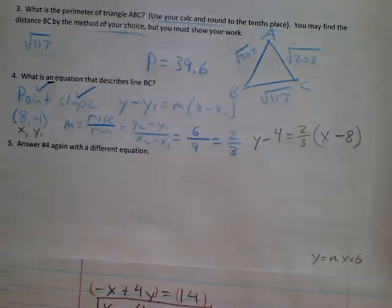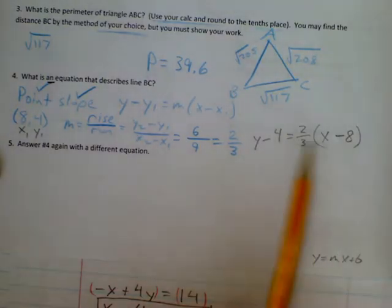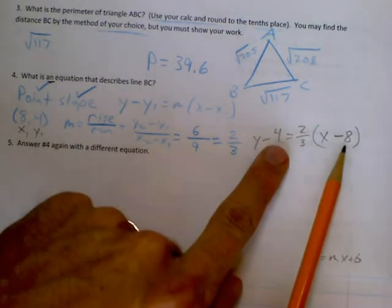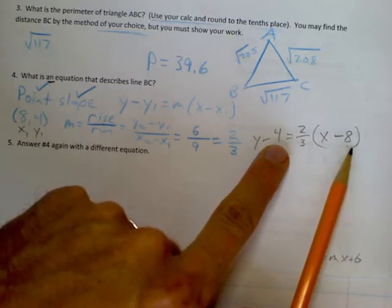So number three, well how do you find the perimeter of anything? That's right class, you add up all the sides. And so we know how long two of the sides are. We know that one of them is the square root of 205 and one of them is the square root of 208. But what about that other one, which I believe is BC?